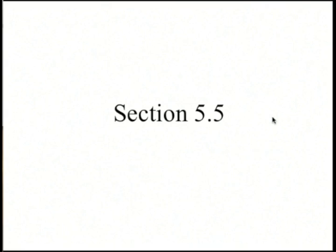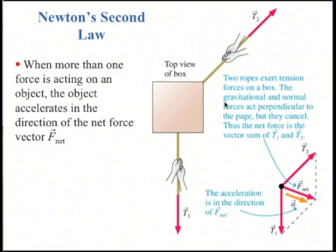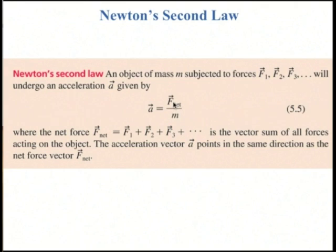Chapter 5 ends with an introduction to Newton's first and second laws. We start with Newton's second law. When more than one force is acting on an object, the object accelerates in the direction of the net force. You have to add up the vector sum of all the forces, and the acceleration is in the same direction as the net force and inversely proportional to the mass. The acceleration A equals the net force vector divided by the scalar mass — that's Newton's second law.